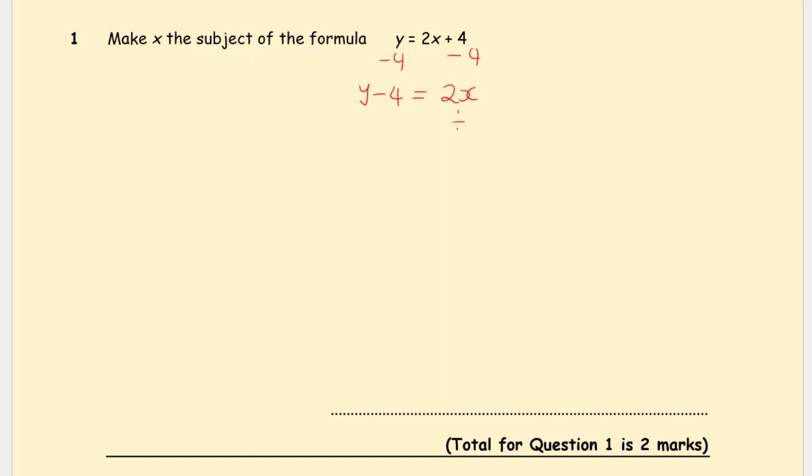The relationship between x and 2 is 2 times x, so we divide by 2. We do the inverse, and we're doing the balancing method. We're going to divide both sides by 2. On the left side, we have (y minus 4) over 2 is equal to x.